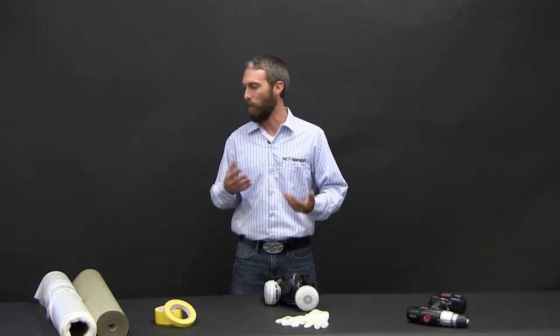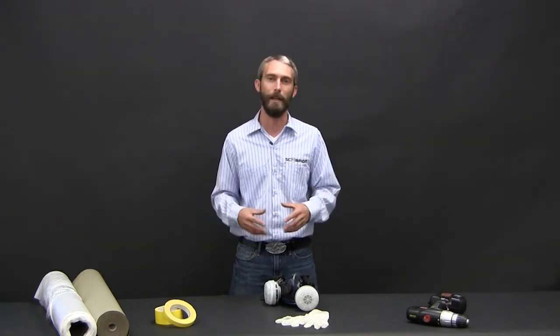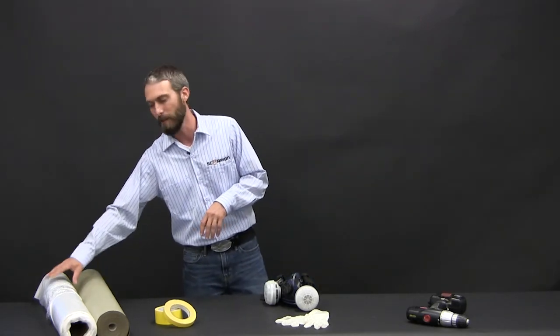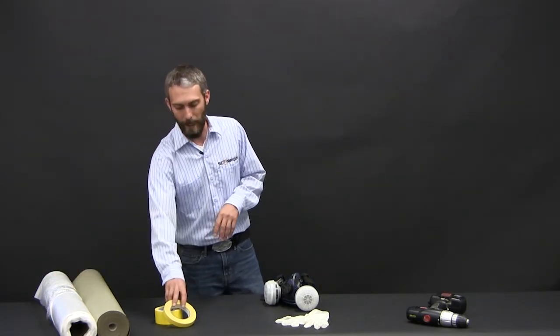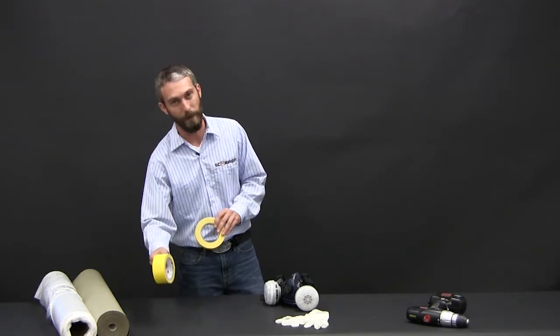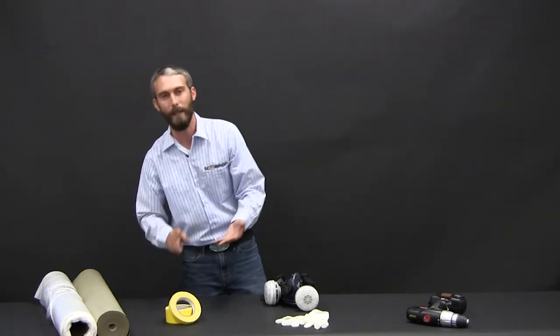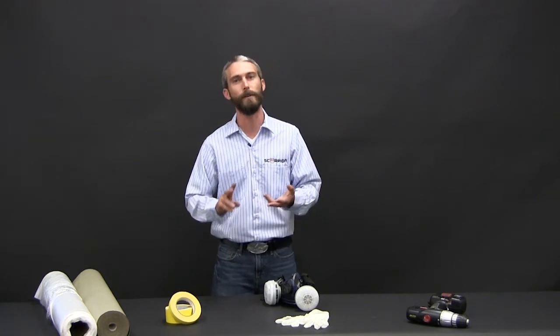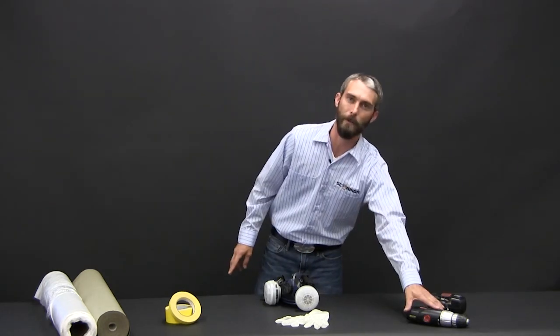Other items that you'll need will be your masking materials and miscellaneous tools, so you'll want to have some masking papers, some masking plastics, tape, we recommend three quarter inch and two inch. And then of course you'll need flathead Phillips head screwdrivers, crescent wrench, some pliers, and a drill to mix with.